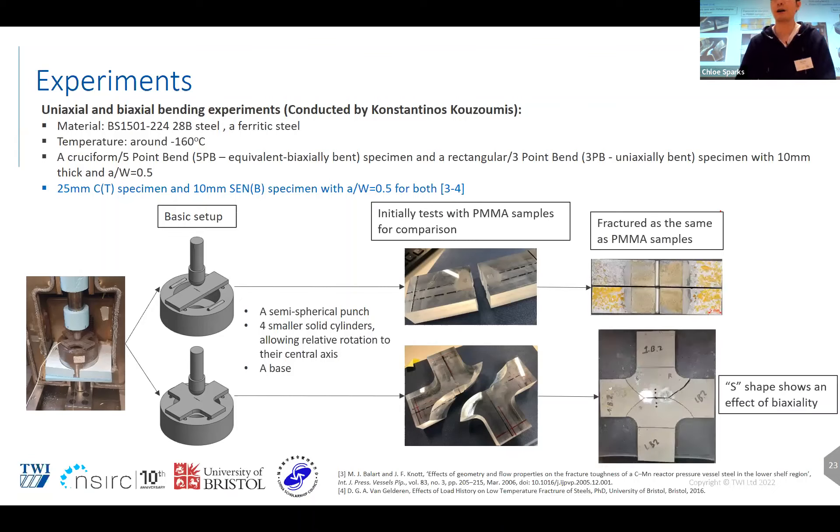And compared with the fractured specimens, we can see the fracture trajectory are very close. The three PB samples fractured in the middle along the ligament. The five PB samples have S-shaped fracture trajectory, which shows an effect of biaxiality, which means this bending experiment are successful.